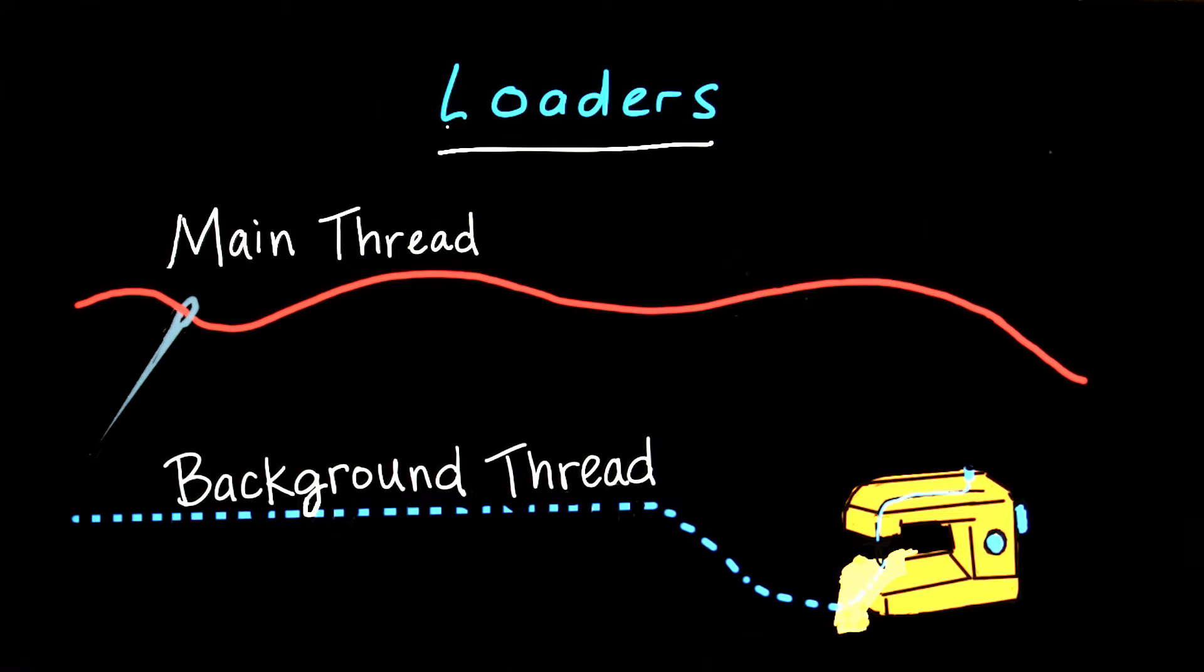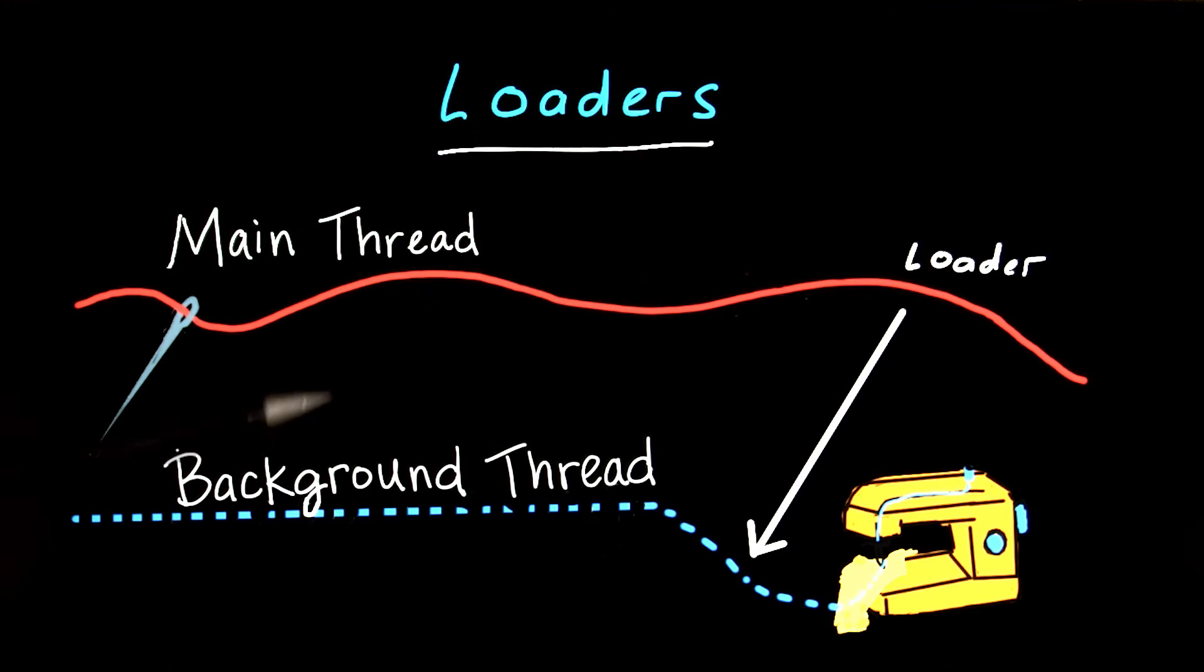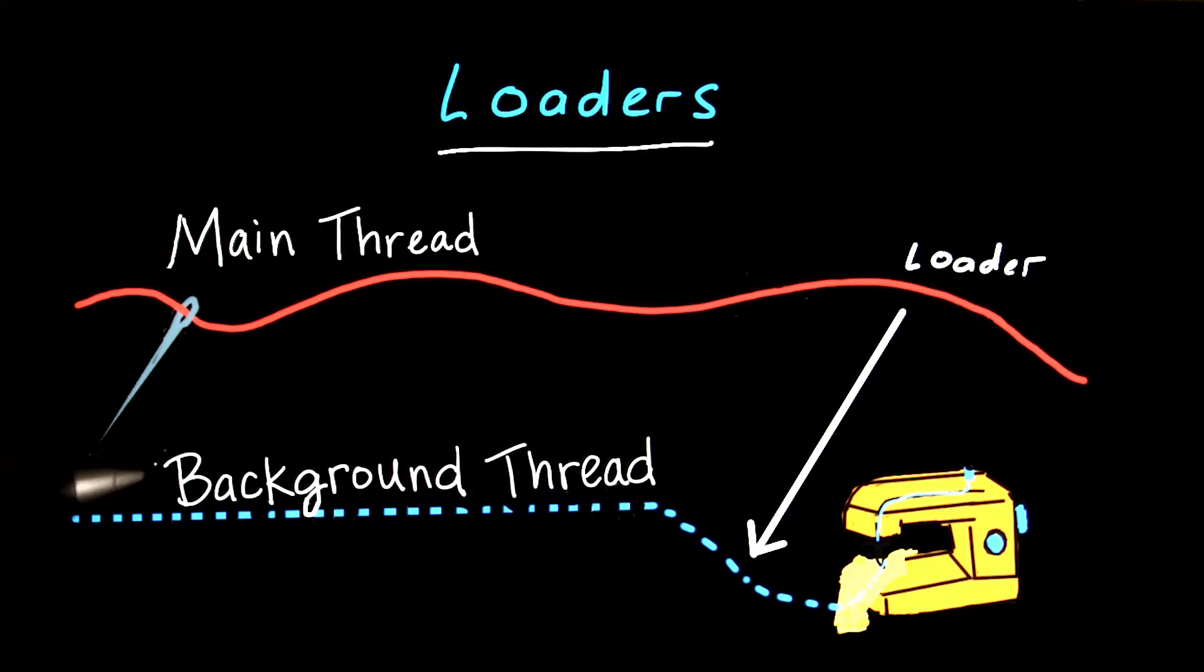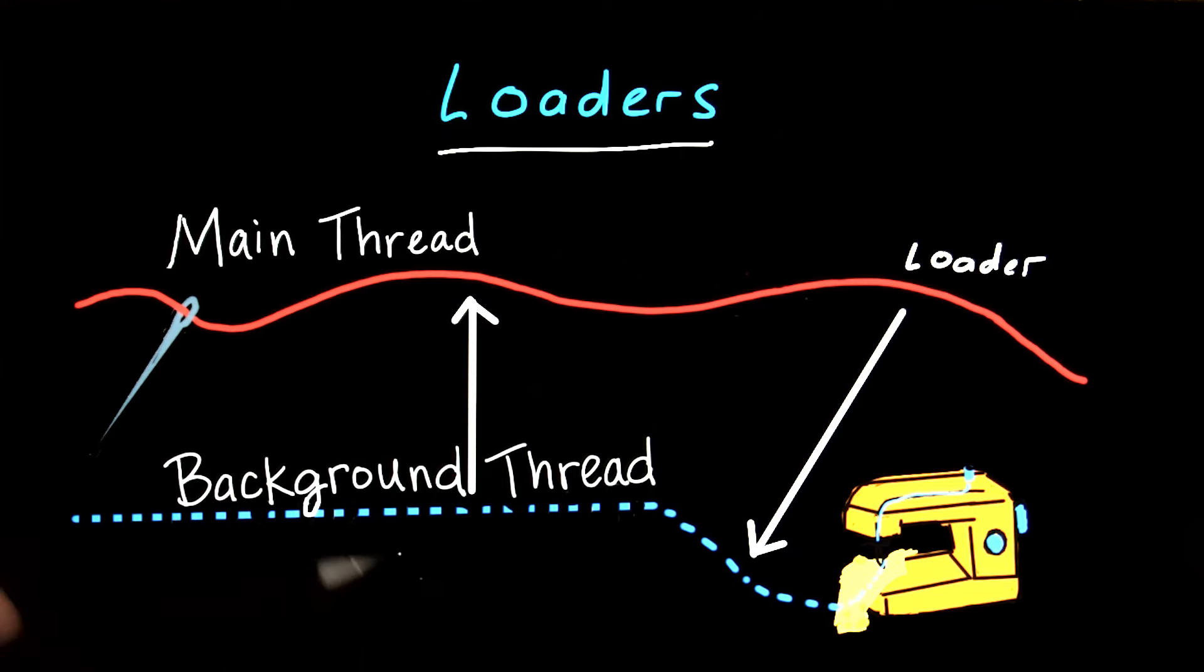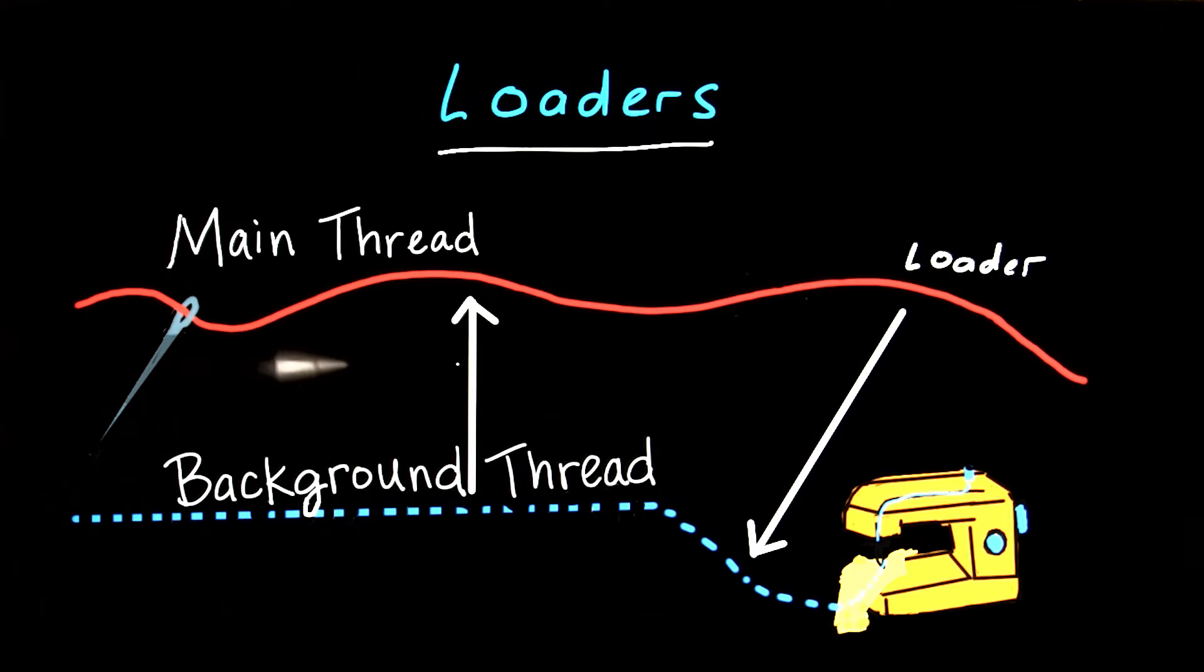Loaders are essentially the best practice implementation for asynchronous data loading within an activity or fragment. So when you create a loader, it creates an async task to load data on the background thread. It then syncs with the UI thread when the initial loading is complete and can be set up to monitor the underlying data and deliver any updates to the UI thread as well.